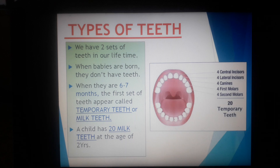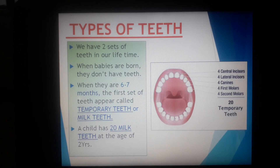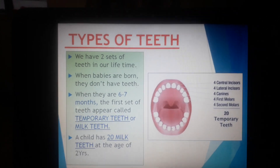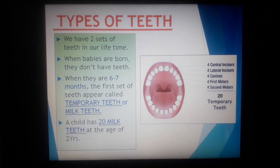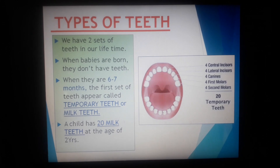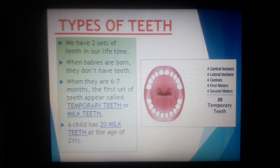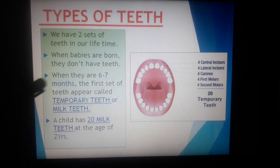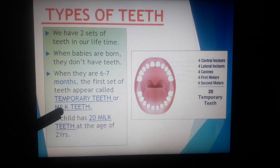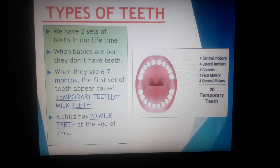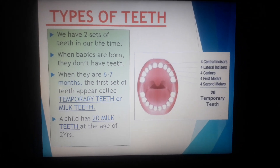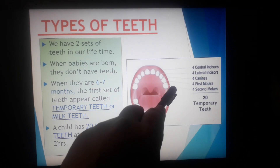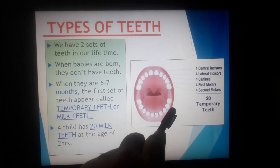We have two sets of teeth in our lifetime: temporary set and permanent set. When we take birth, we don't have any teeth. When we attain the age of six to seven months, the first set of teeth appear, called temporary teeth or milk teeth. When we attain the age of two years, we have 20 milk teeth — 10 in the upper jaw and 10 in the lower jaw.